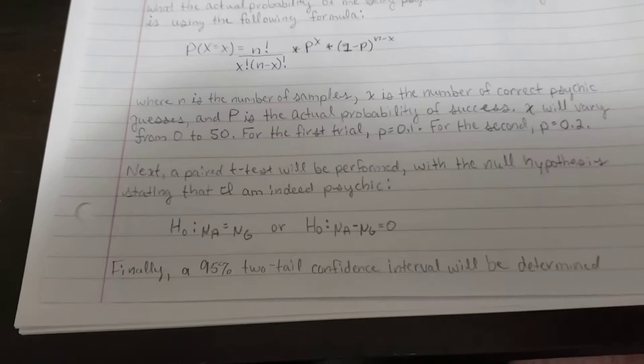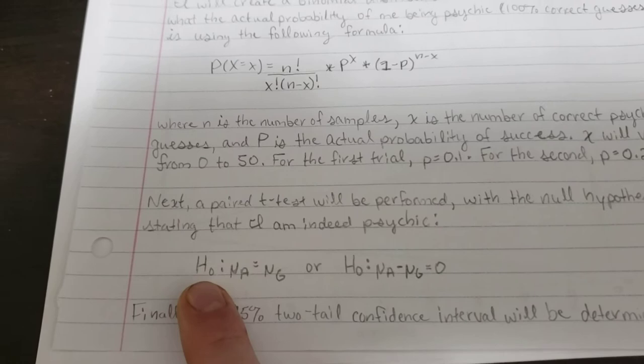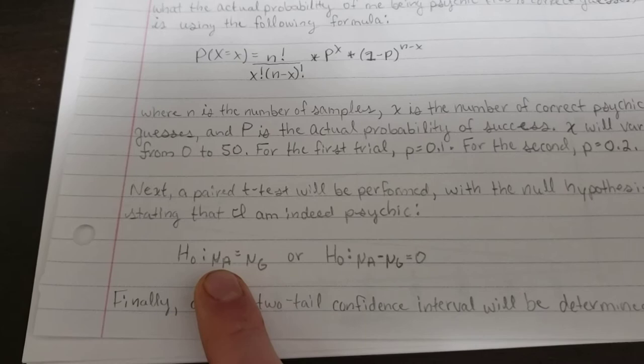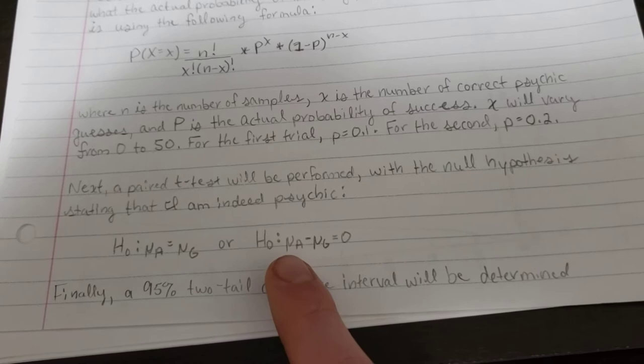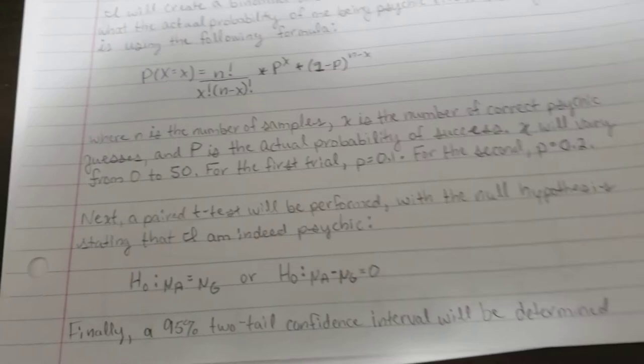Next, we're going to do a paired t-test where the null hypothesis states that I am indeed a psychic. So the null hypothesis is defined as the mean of the actual numbers is equal to the mean of the guessed numbers, or it's defined as the mean of the actual numbers minus the mean of the guess numbers is equal to 0. Finally, at the end we'll do a 95% two-tail confidence interval to determine what is the probability of rejecting the null hypothesis.